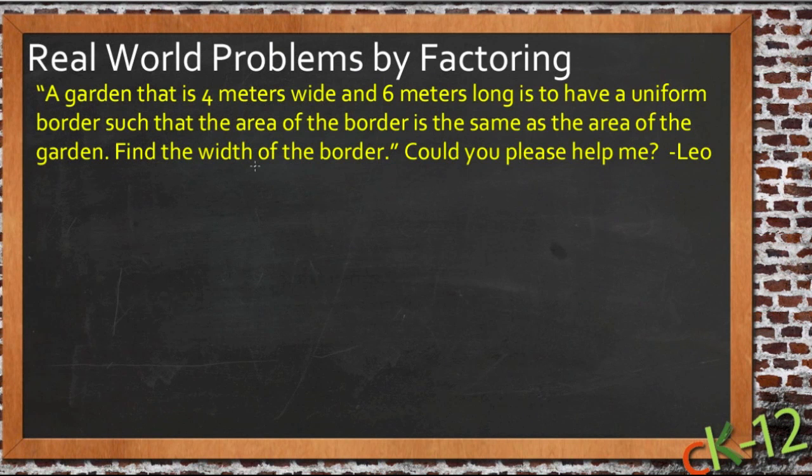I'm going to take one that was sent in by a student named Leo who wanted help with a question about a garden. We'll more slowly go through making up the problem and then more quickly go through the problem itself. He says he has a garden that is 4 meters by 6 meters, so it's a rectangle, and it's going to have a uniform border such that the area of the border is the same as the area of the garden. He needs to find the width of the border.